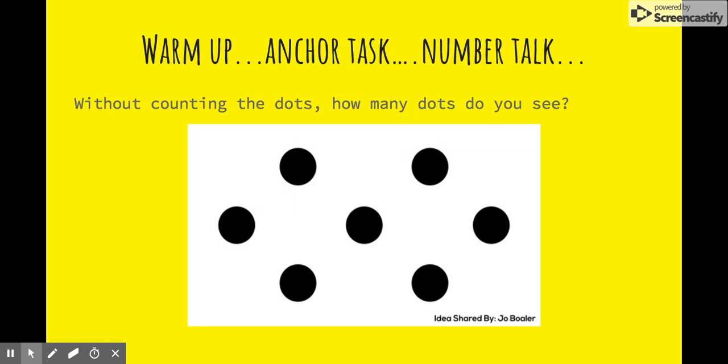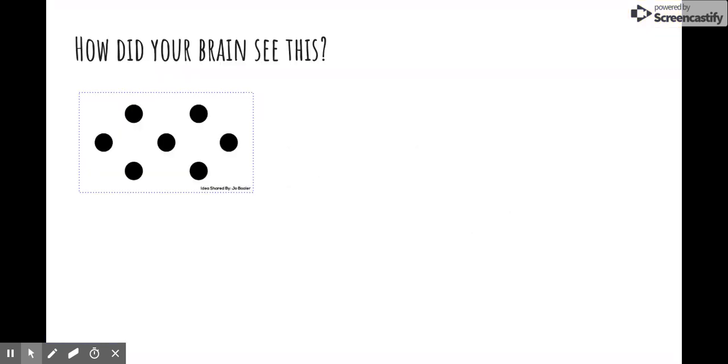Let's start off with a number talk. Your students likely do number talks in their class frequently. This is an example of a dot talk. I want you to tell me how many dots you see without counting them individually. How did your brain see this number? In a number talk we want to focus on your strategy and not just the answer.